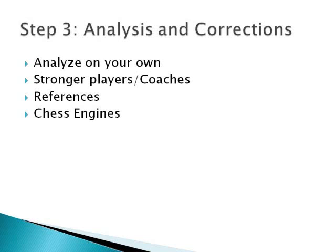The next step is analysis and corrections. This is where you look at those critical positions and try to find the truth — not just the moves, but also the thought process you took during those positions, or perhaps working on increasing your focus during specific positions. Generally, you analyze on your own first, looking at the positions critically by yourself. Then use stronger players — friends or coaches — to help find better moves or thought processes. Use references, particularly helpful in the opening with books or a chess database. Finally, use the chess engine especially to find tactical blunders.